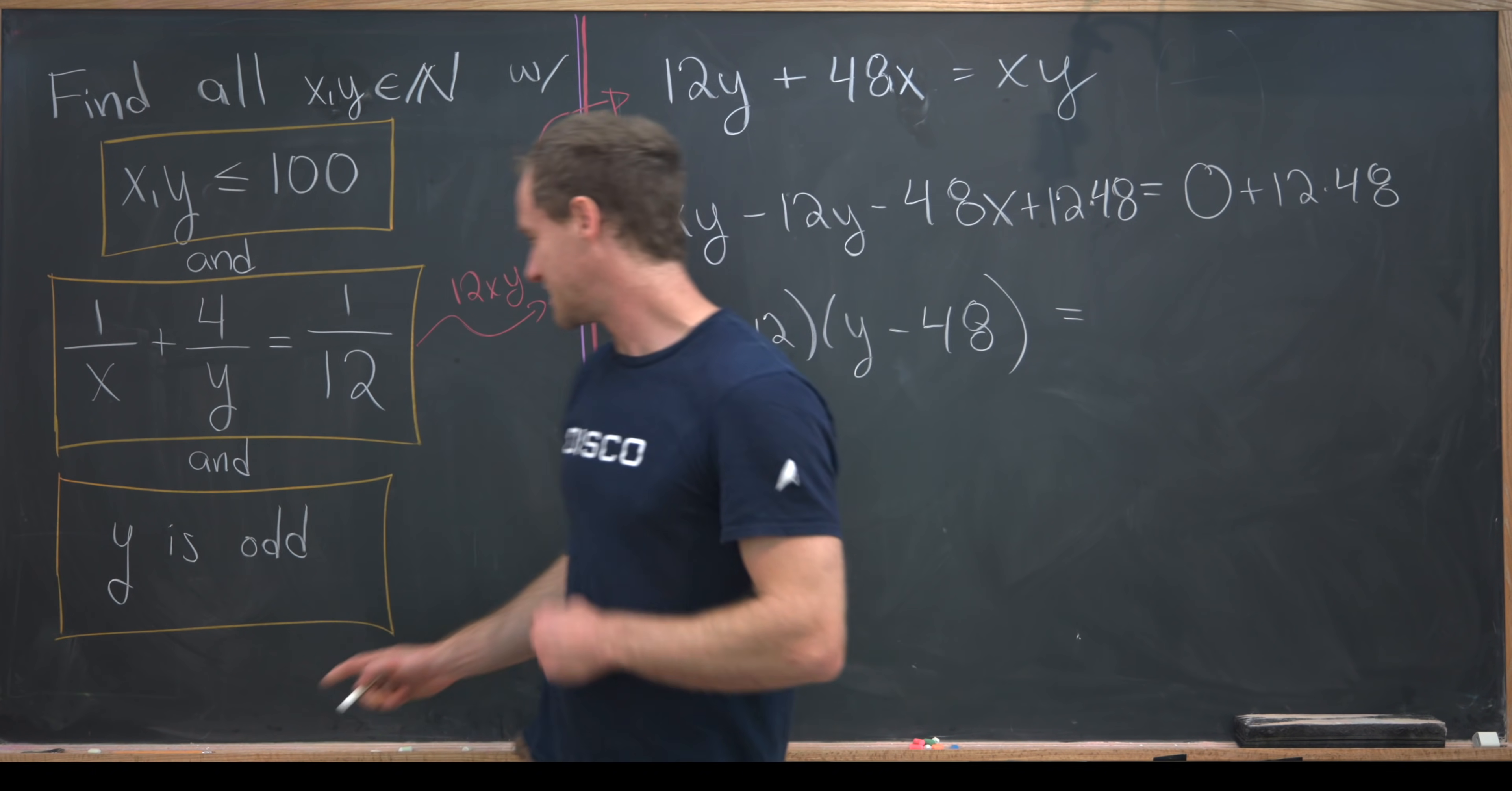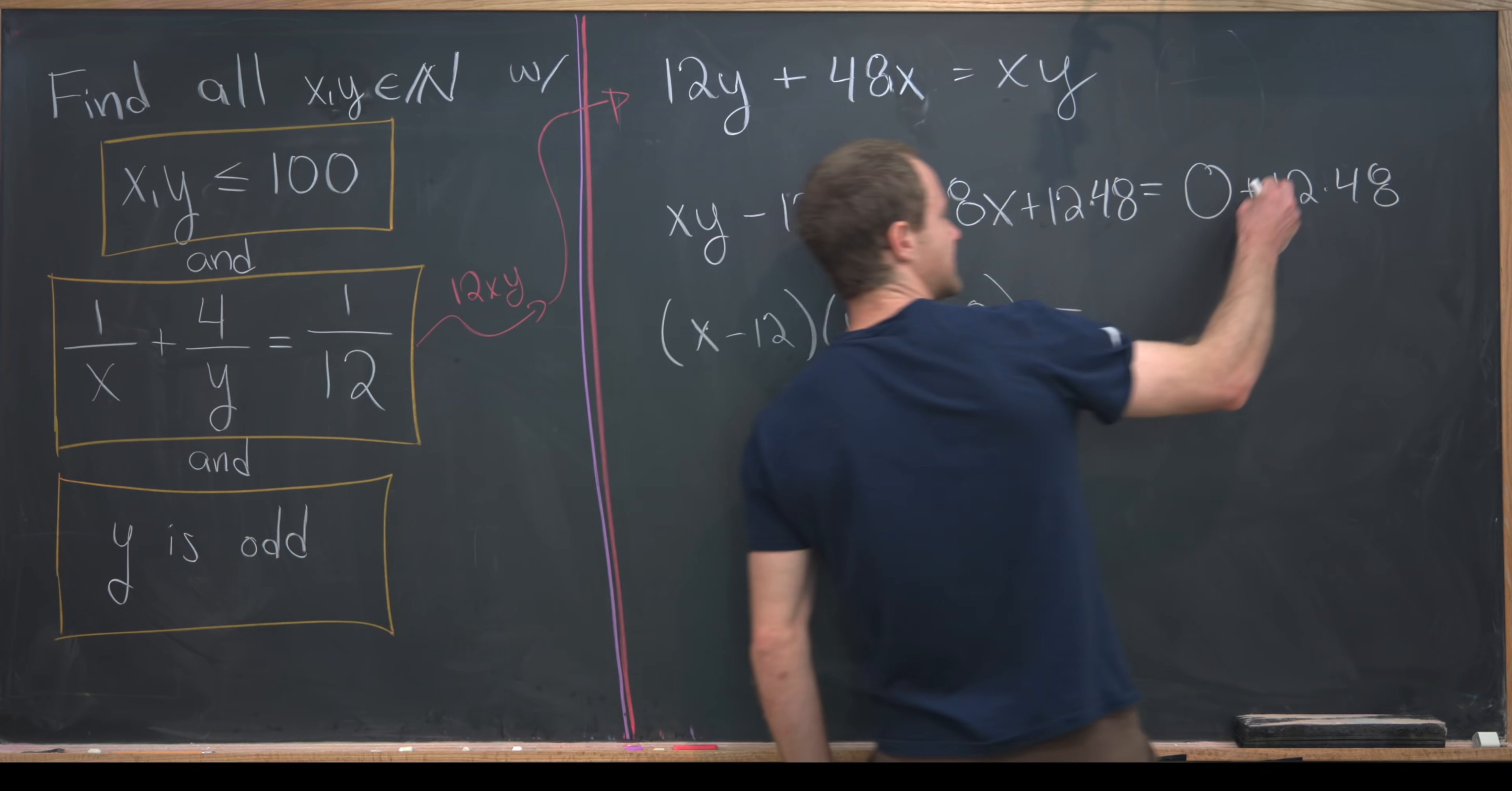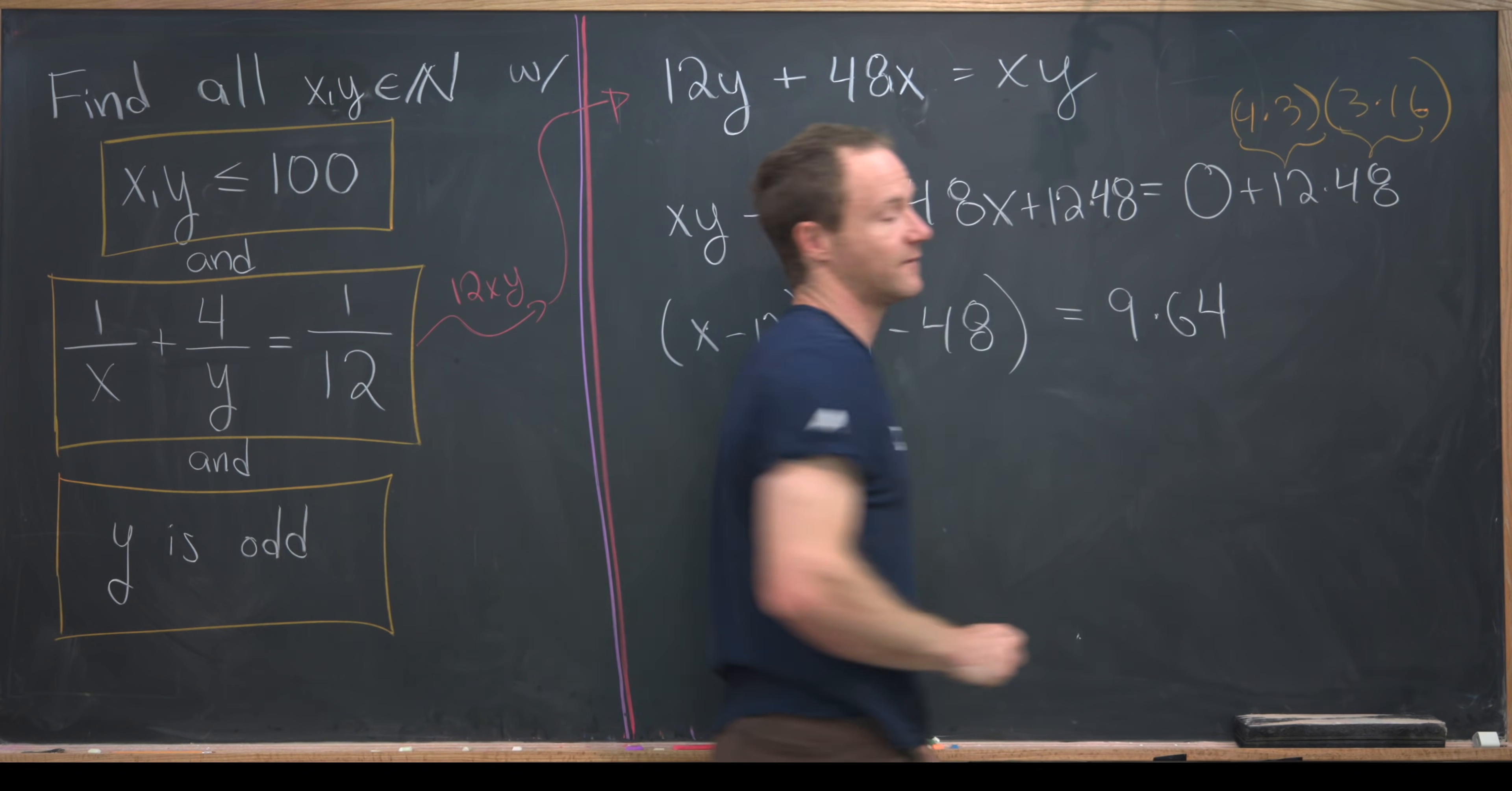Now we're going to think about this next condition where y is odd and use that condition to motivate us to factor the odd numbers out of this. Let's notice that this 12 is 4 times 3, and this 48 is 3 times 16.